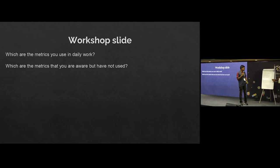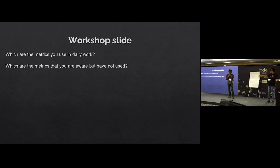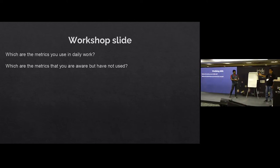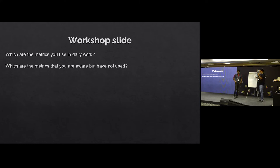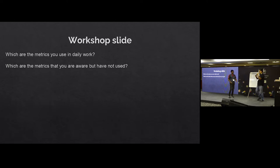One call-out here: some of these are lagging indicators, which means you can't directly act on them. There is no way you can directly do something to improve D7 — it has to be tackled through engagement metrics. Some of these are metrics you can act upon, and some are lagging indicators which tell you what you should do.